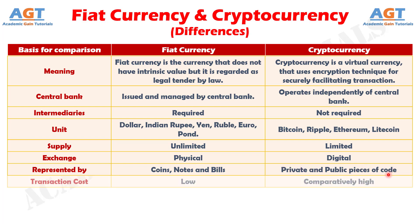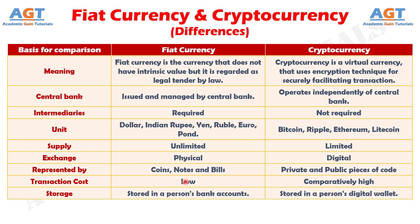Number 8: The transaction cost of cryptocurrency is higher in comparison to fiat currency. Difference number 9: If we talk about storage, fiat currency earned by the individuals is stored by them in their bank accounts, whereas cryptocurrency is stored by the individuals in their digital wallet.